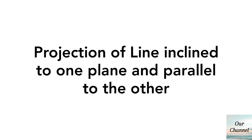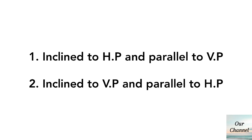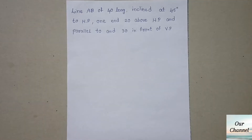Hello everyone, welcome back to our channel. Today I am going to explain about projection of a line inclined to one plane and parallel to the other. There are two cases: the first is a line inclined to HP and parallel to VP, and the second is a line inclined to VP and parallel to HP. Here HP is the horizontal plane and VP is the vertical plane.